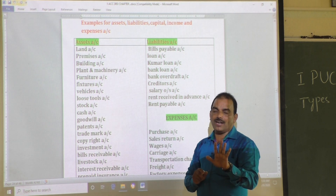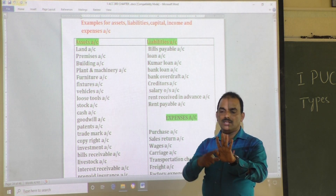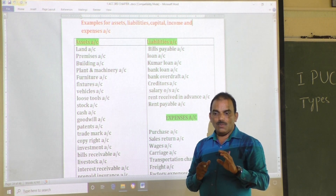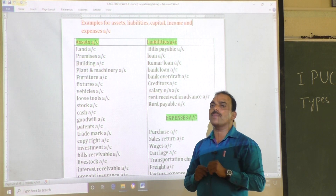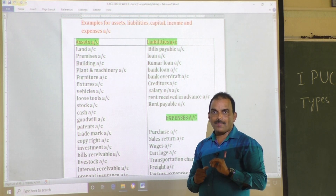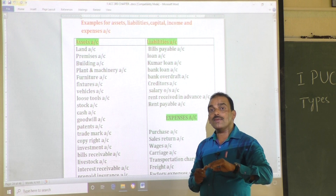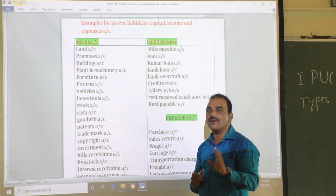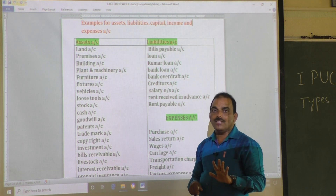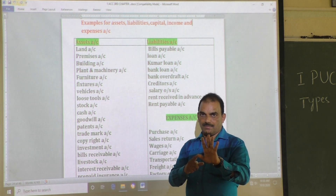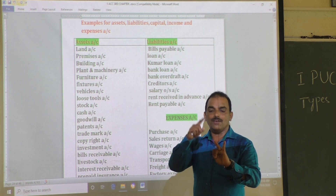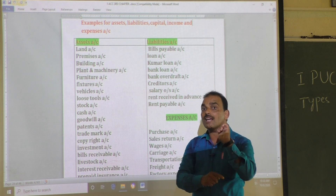Here accounts are divided into five under the American approach: assets account, liability account, capital account, income account, and expense account. In your question paper, there is one six-mark topic — as per the question paper pattern, six-mark questions are there. You are given twelve accounts and required to identify which is asset, which is liability, which is capital, which is expense, and which is income account.